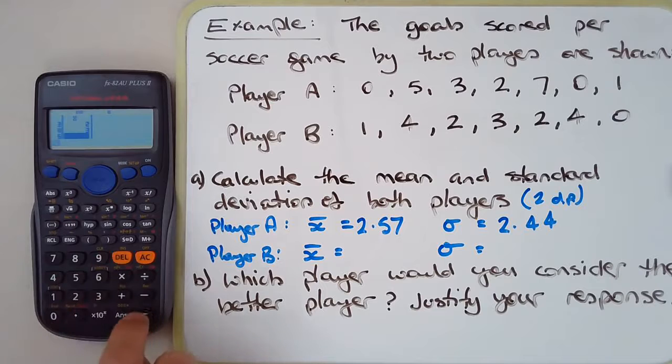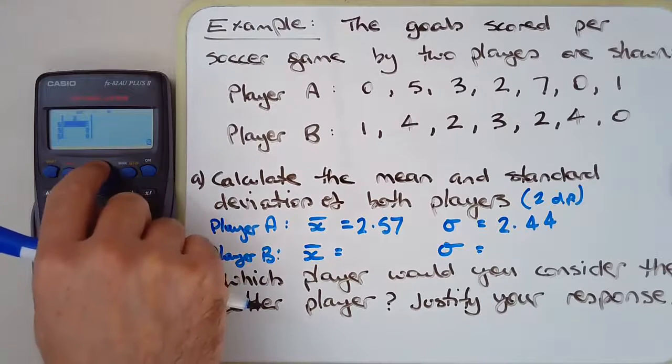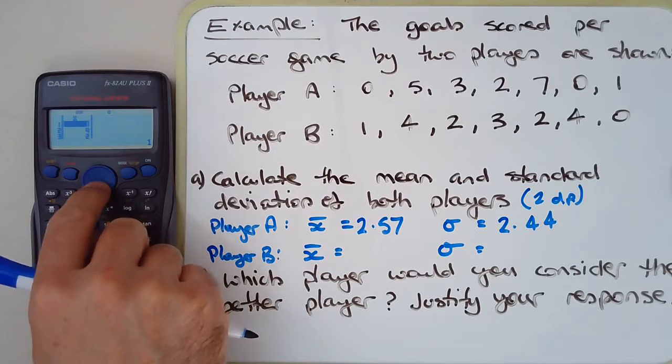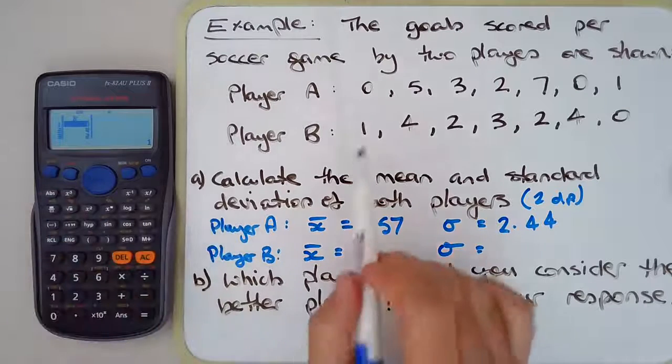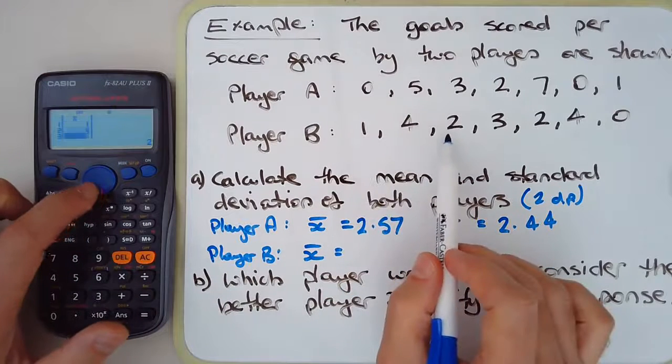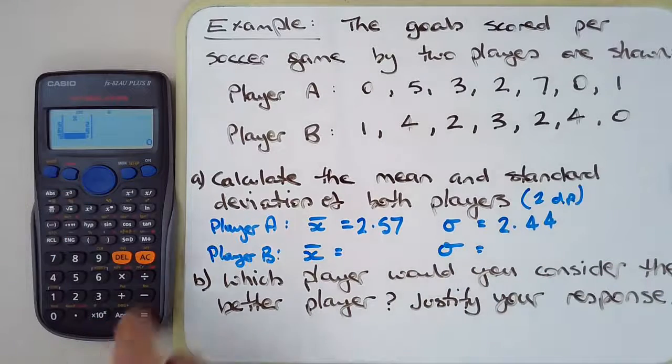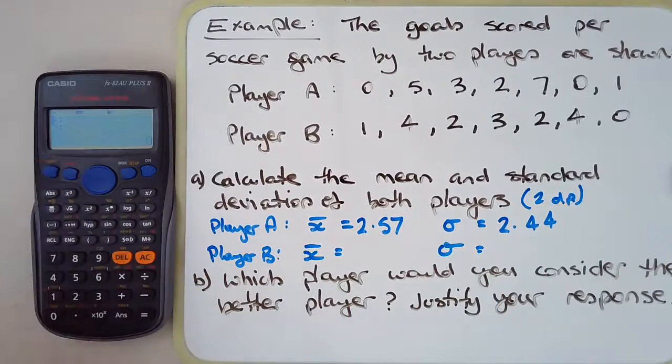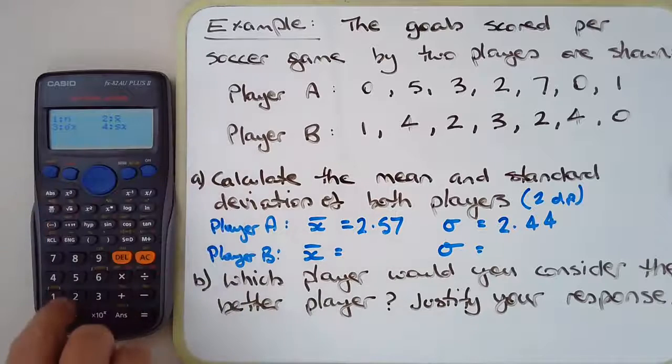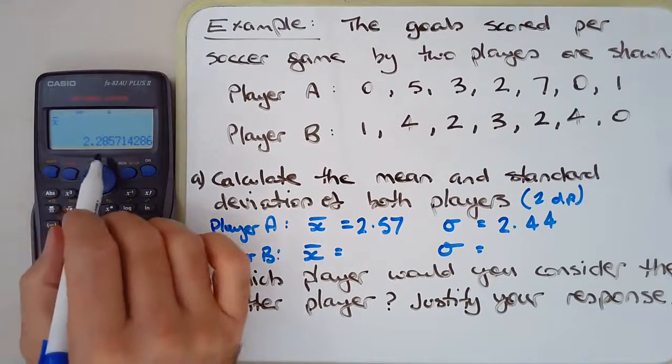Two, four, and zero. I'll just check that—you can always make sure if you're not sure if you entered things in properly. One, four, two, three, two, four, zero. Yep, happy with that. AC, shift, one var, x bar, number two, and we get 2.29.